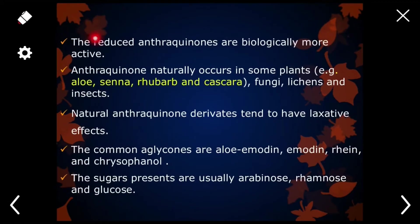The reduced form of anthraquinone is more biologically active. Anthraquinone is naturally found in aloe, senna, rhubarb, and cascara. Although they are also present in fungi, lichens, and insects as well.